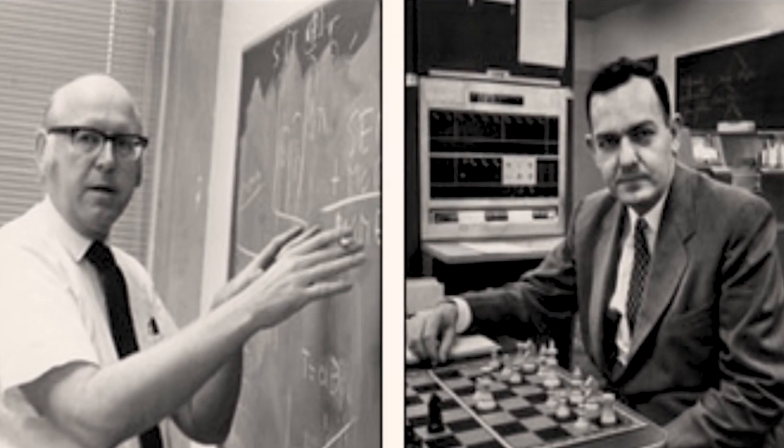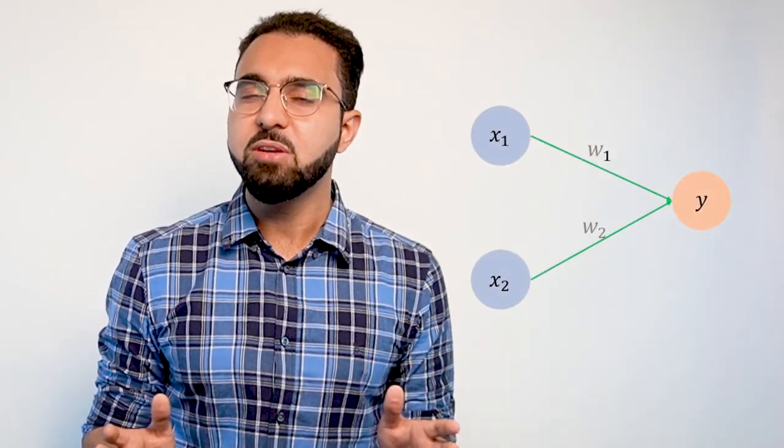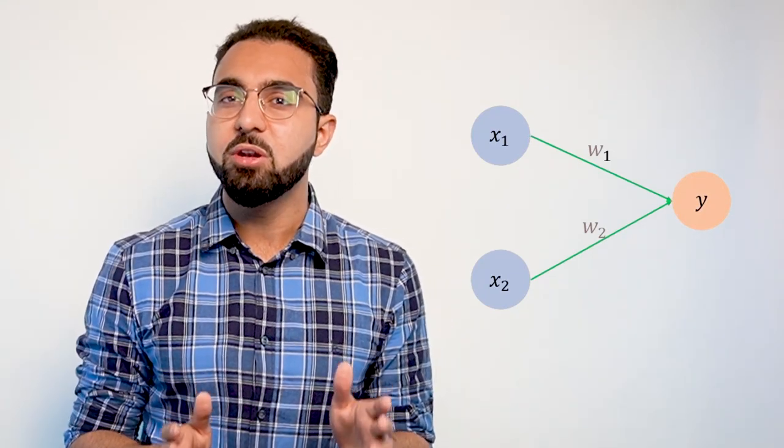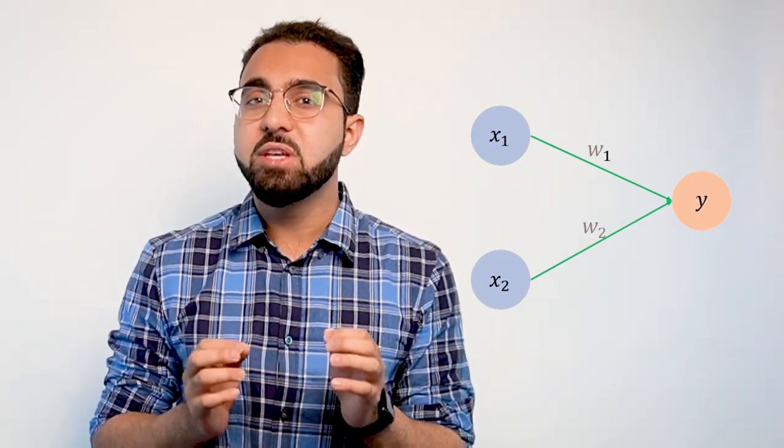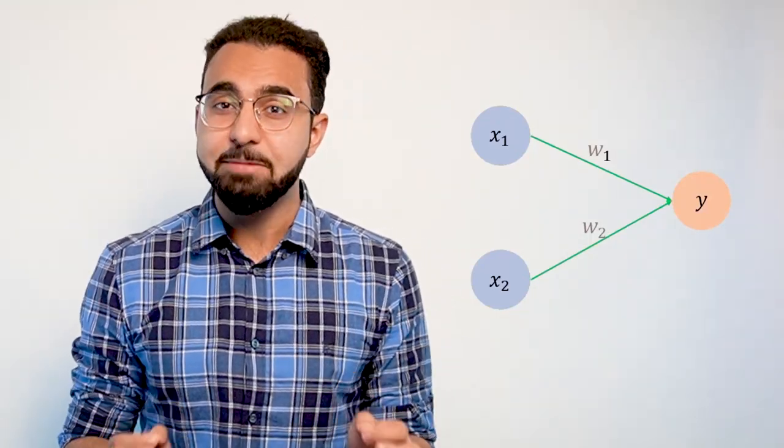December 1956, Herbert Simon and Alan Newell developed the Logic Theorist, the first AI program. 1957, Frank Rosenblatt develops the Perceptron, the most basic version of an artificial neural network. By the way, the extension of this algorithm alone will later give rise to the whole field of deep learning.